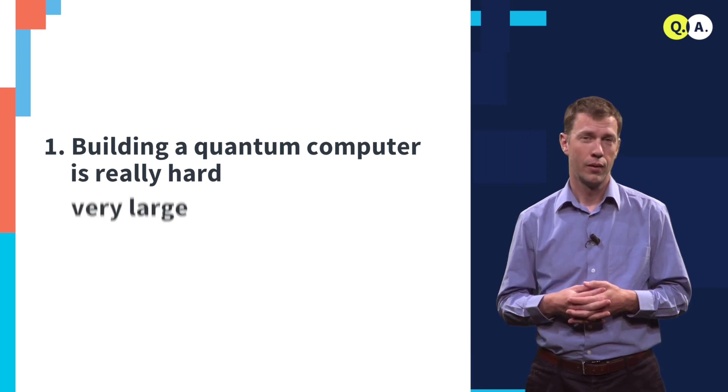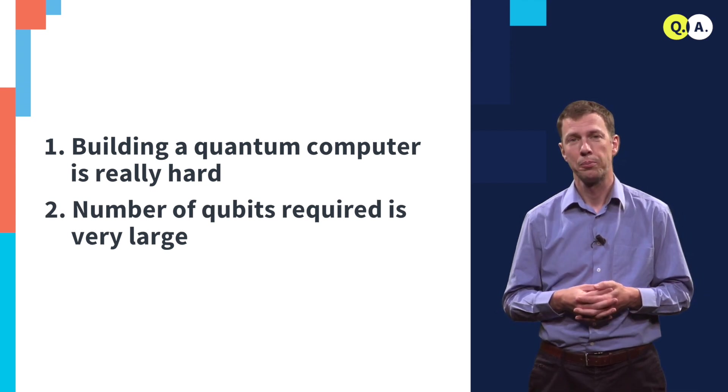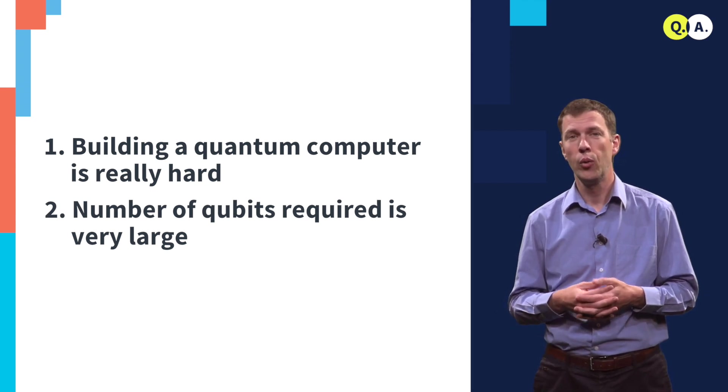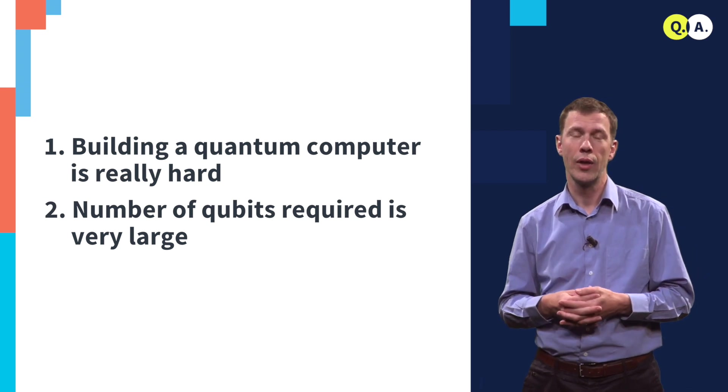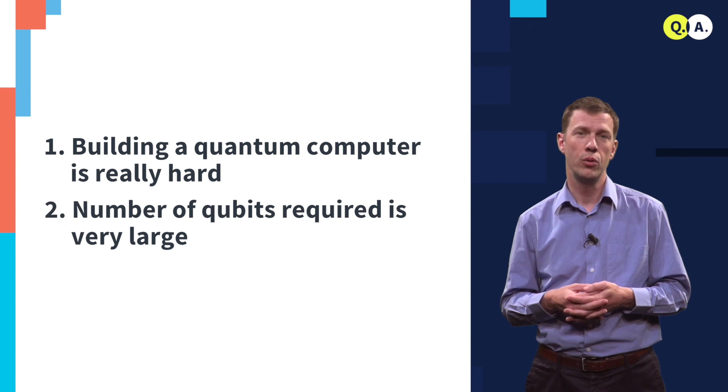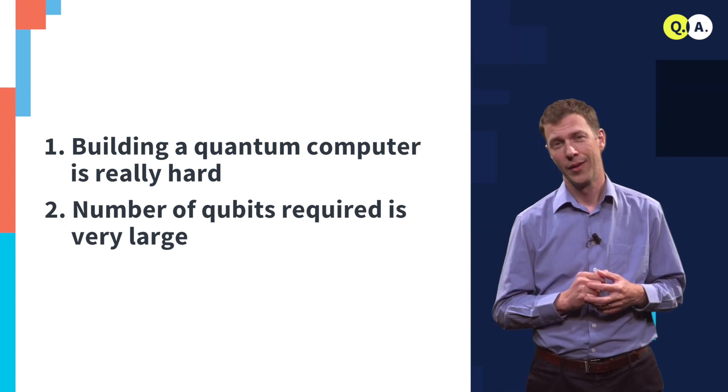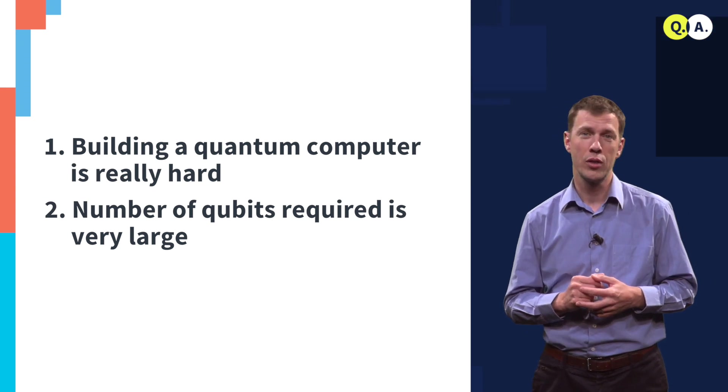Second, the number of quantum bits that we require to factor realistic numbers is also very large. If we want to factor a number 2000 bits long, it will take of the order of 10,000 quantum bits to do that. And that even assumes that those quantum bits are perfect. And in reality, we know that quantum bits are not perfect.